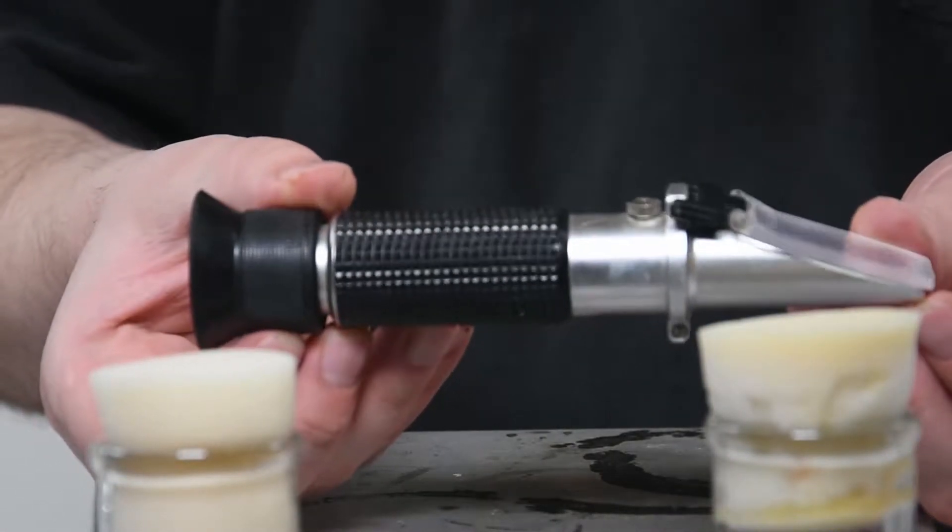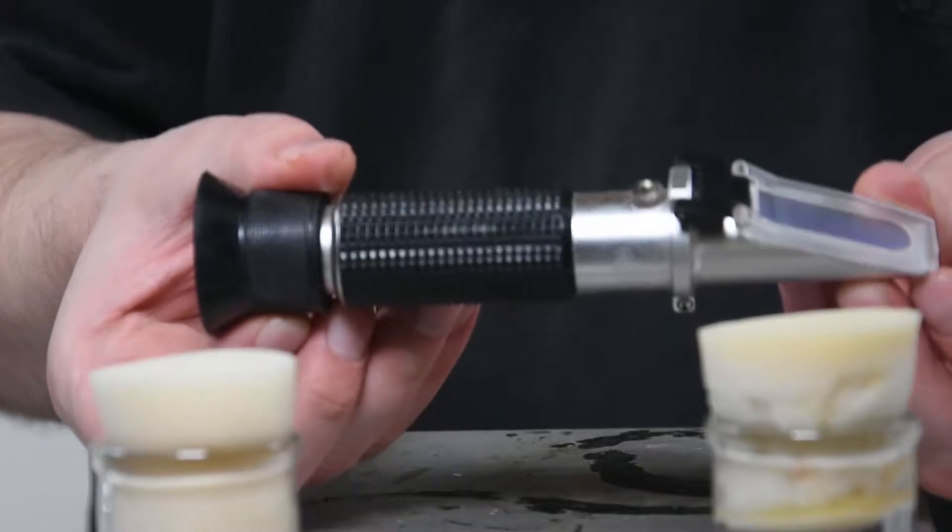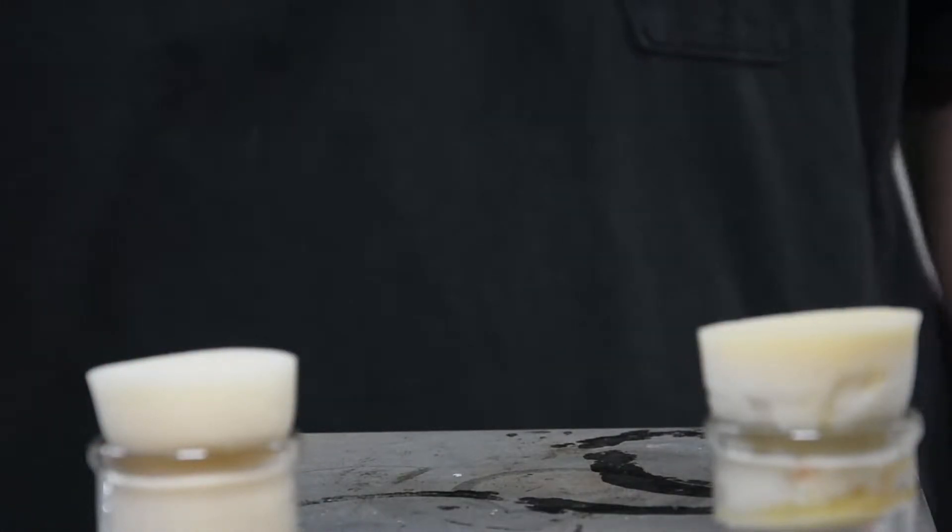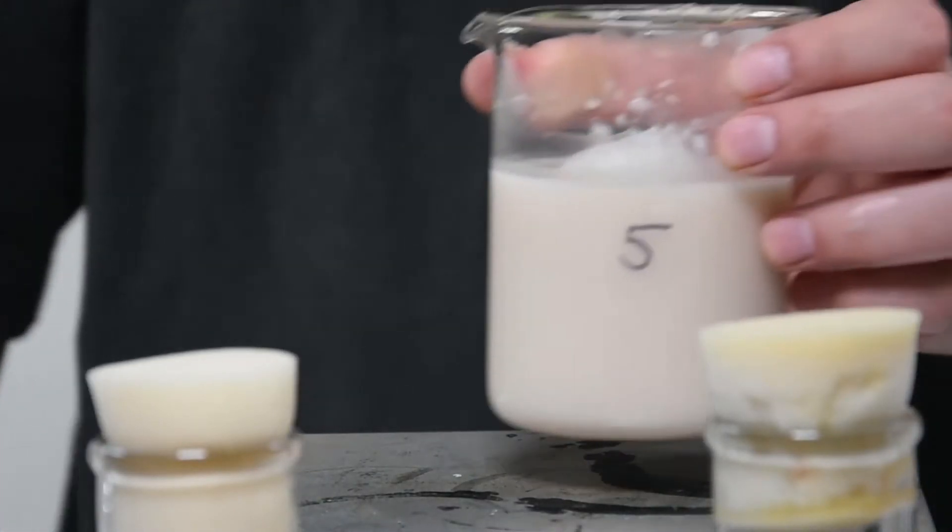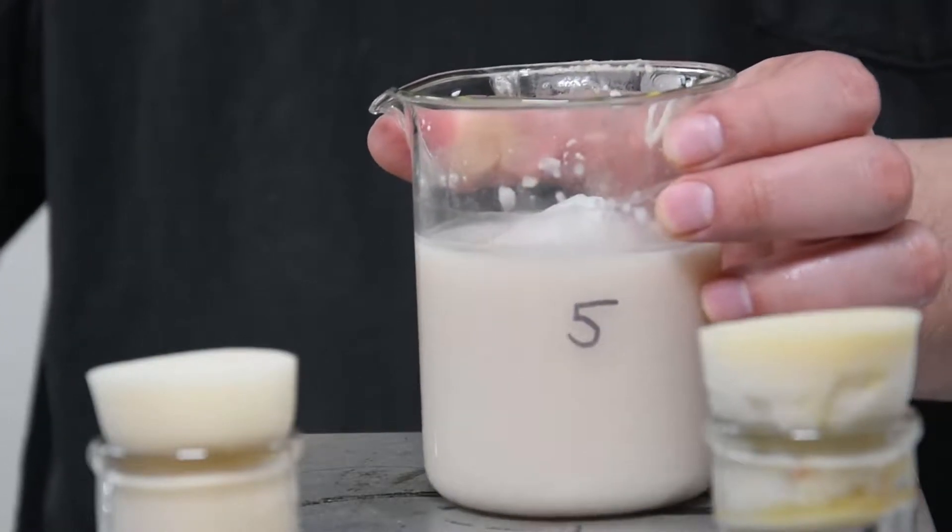This is where we would normally take a refractometer reading, but because Phil was also filming this at the same time, he completely forgot. But it should be around 1040 for the starting gravity.